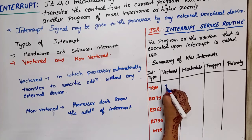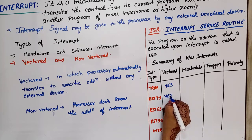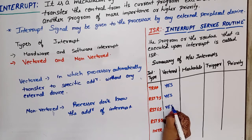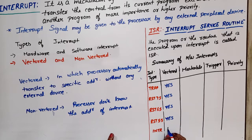TRAP is vectored, RST 7.5 is vectored, RST 6.5 is vectored, RST 5.5 is vectored, and INTR is the interrupt request pin which is non-vectored. Now we have written vectored and non-vectored, so we need to know their addresses.